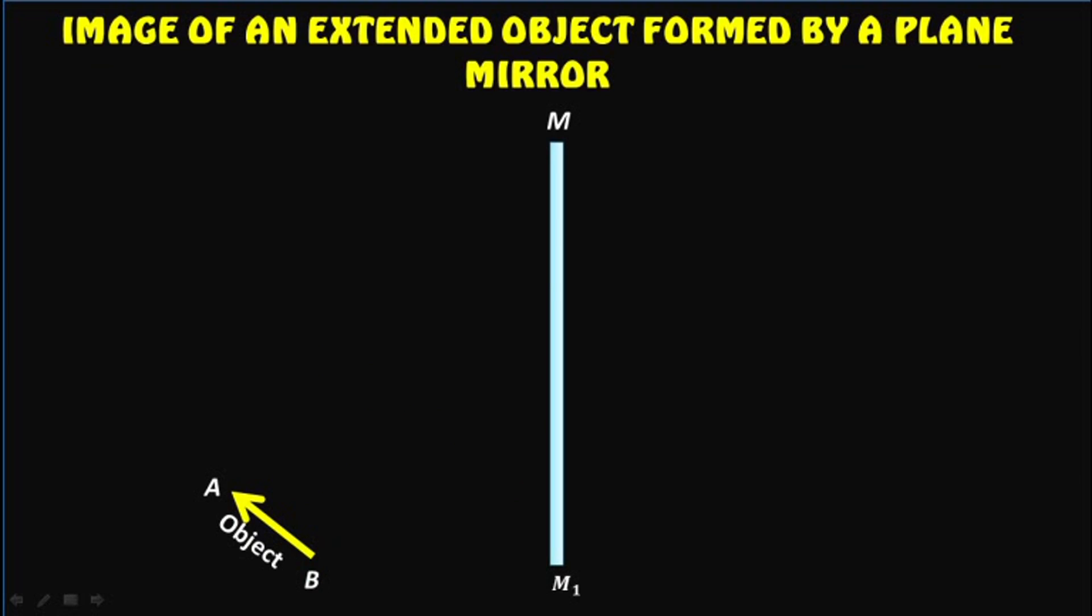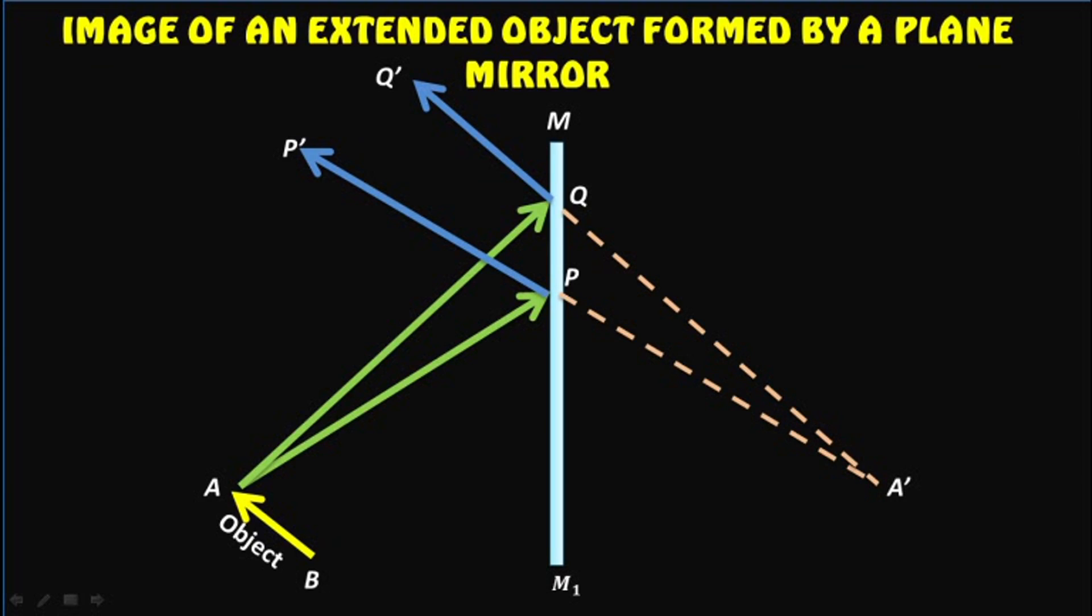Let AP and AQ be the two rays incident on the mirror from point A of the object which get reflected from the mirror as PP' and QQ' respectively. These reflected rays, when produced backwards, meet at a point A'. Thus A' is the virtual image of point A.